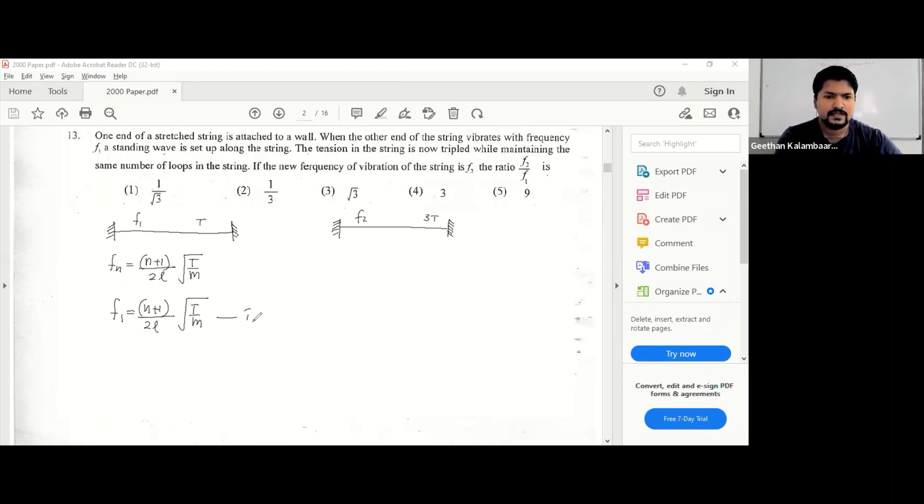And once you apply it for the second one, you can say f2 is equal to the same overtone, so it's n plus 1 over 2l into root 3t over m.